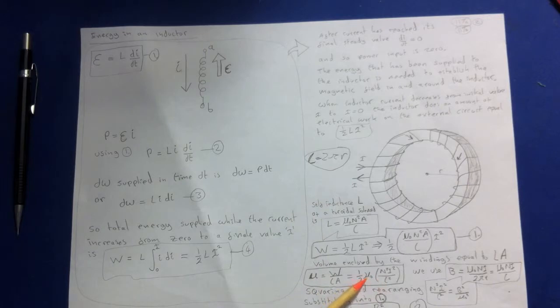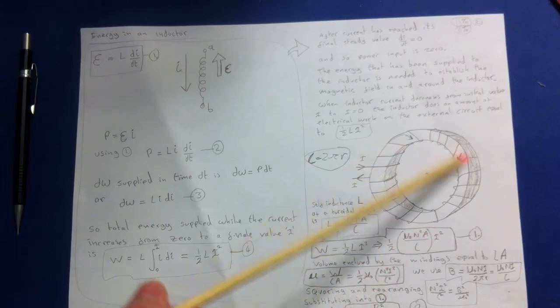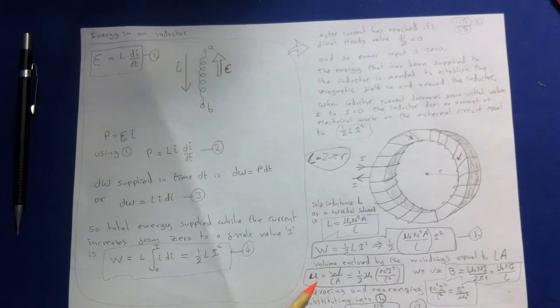So we end up with a half permeability, the number of turns, times the current squared over this total circumference length squared. So that gives us the energy density, which is the energy per unit volume for an inductor.